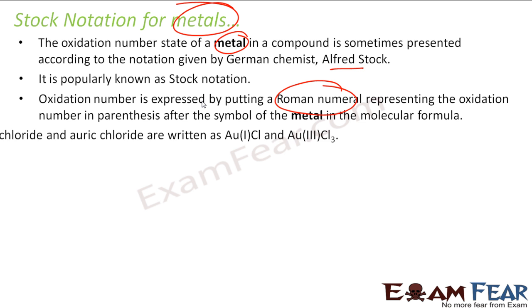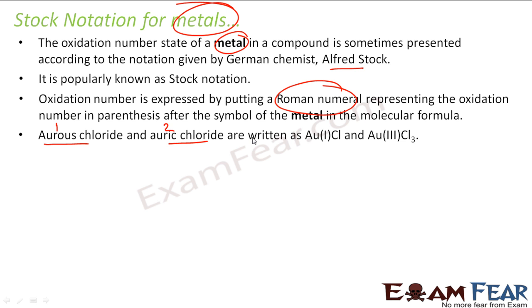For example, if you see aurous chloride and auric chloride, in this case the oxidation number is one, in this case oxidation number is three. So aurous chloride is AuCl and auric chloride is AuCl3. In this case oxidation number is plus one, so one is mentioned here. In this case the oxidation number is plus three, three is mentioned here.